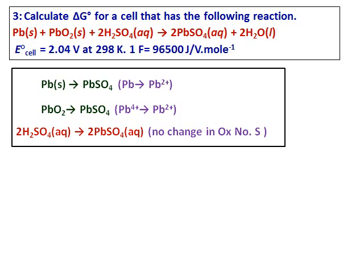And PbO₂ gets converted into PbSO₄ again and the oxidation state of lead changes from +4 to 2+. And the other reaction in which the sulfuric acid is becoming PbSO₄ or water, if you look at it, the oxidation state of sulfur is not changing. Oxidation state of hydrogen is not changing. Neither the oxidation state of oxygen is changing.